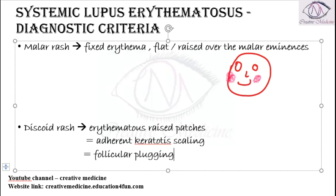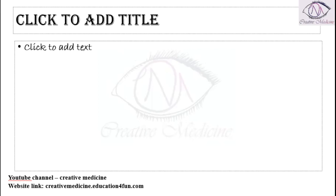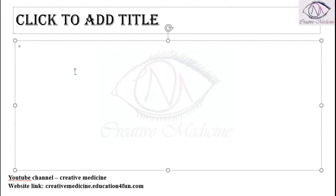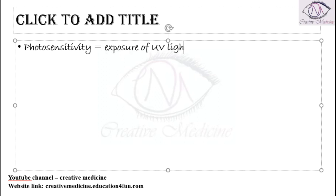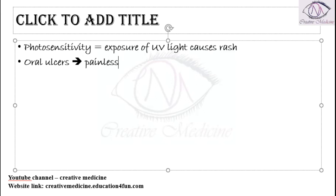So the first criterion is malar rash, the second is discoid rash, and the third criterion is photosensitivity. Photosensitivity is mainly due to exposure to ultraviolet light causing a rash — whenever the patient is exposed to ultraviolet light and a rash develops. The fourth criterion is oral ulcers, which are painless oral ulcers.